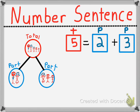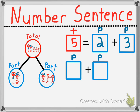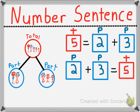However, we can do a number sentence a different way by putting — normally like we see it — the two parts first, which gives us a total. Again, we have two adults and three children, so two parts, and that's going to give us a whole or a total of five. Notice both the totals are the same, even though they're on different sides, and both the parts are the same. These are two different ways that we can write a number sentence.